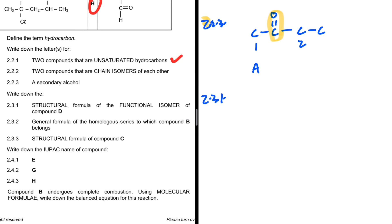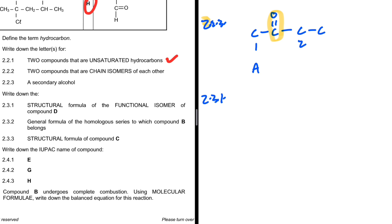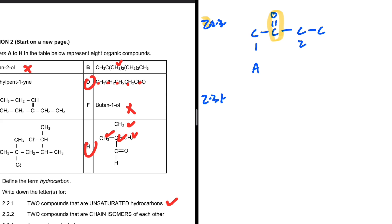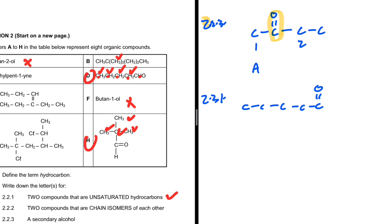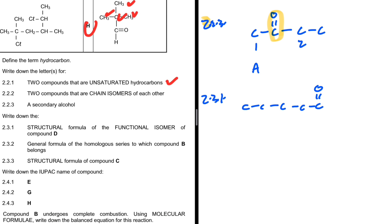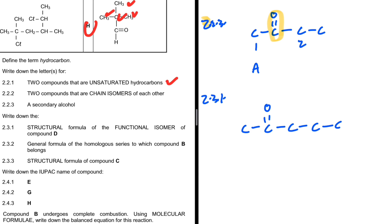Question 2.3.1: write the structural formula of the functional isomer of compound D. D is an aldehyde with five carbons. The functional isomer of an aldehyde is always a ketone, so we need a ketone with five carbons. We can use pentan-2-one — the carbon bonded to the oxygen must be bonded to two other carbons, making it a ketone rather than an aldehyde.